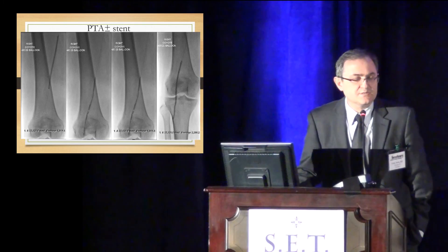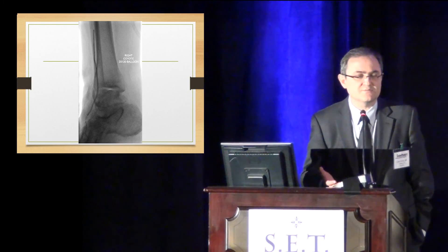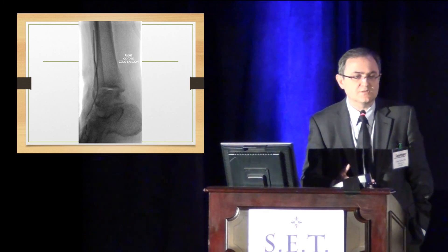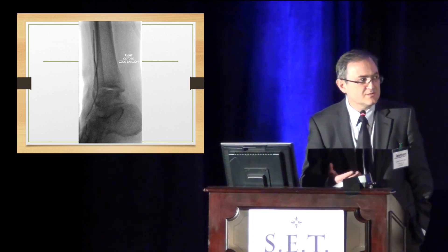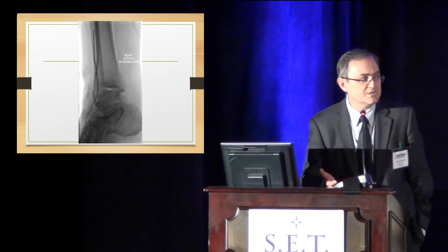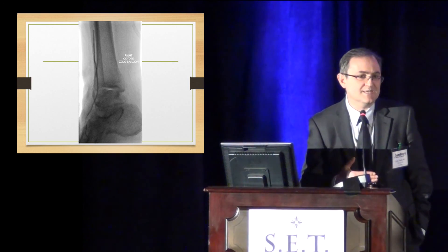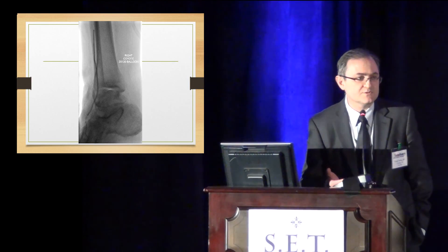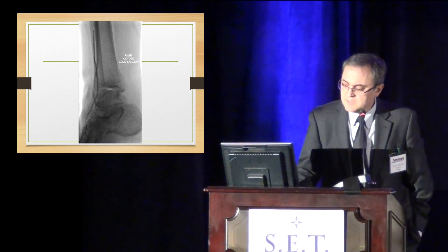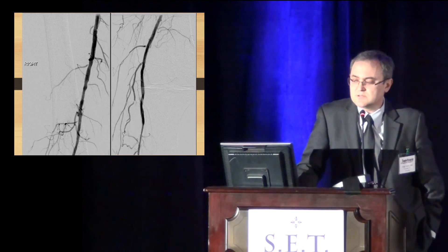This is probably the most critical portion of the procedure. Because once you have the flossing access, generally the procedure will be done whichever way you'd like to treat — it depends on the vessels. If it's heavily calcified, you can use atherectomy, stent, balloon, whichever. The SAFARI technique doesn't dictate what type of intervention you do; mainly it is the access and getting the flossing access. Then you can safely deliver whatever type of treatment you'd like. In this case, I like to use CSI atherectomy.